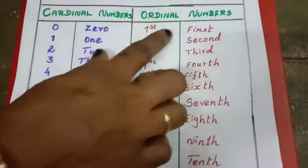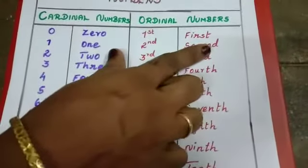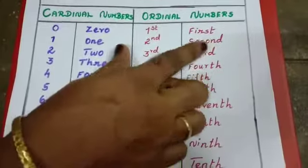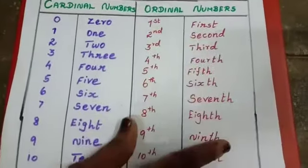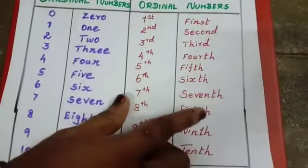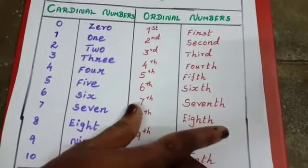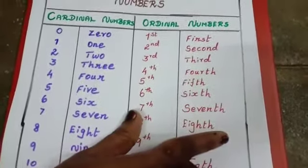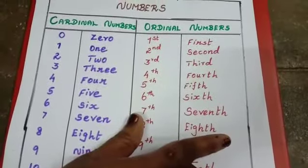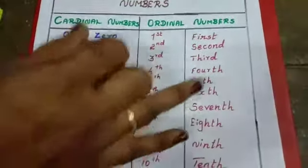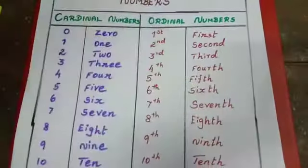And ordinal numbers refer to a number that indicates the position or order of things or objects, such as 1st, 2nd, 3rd.